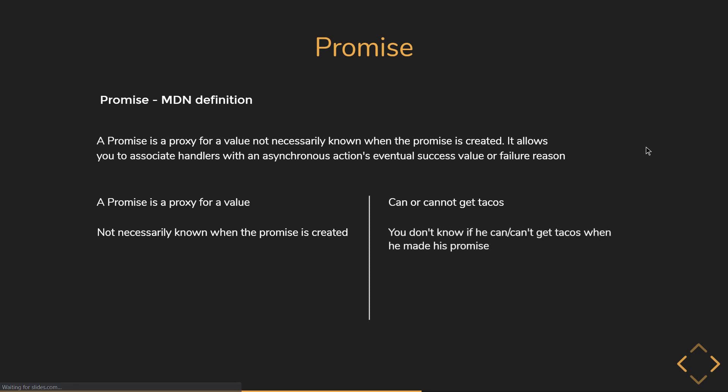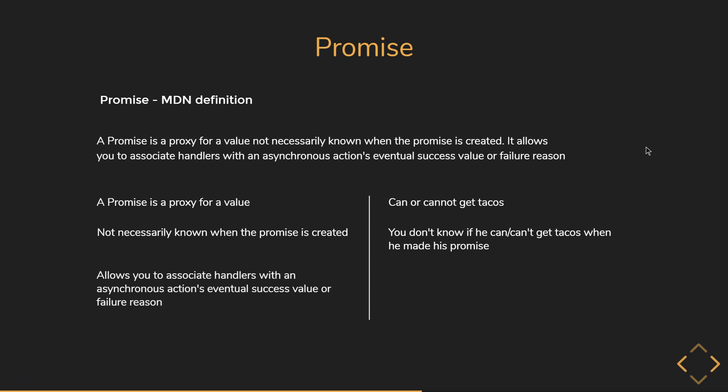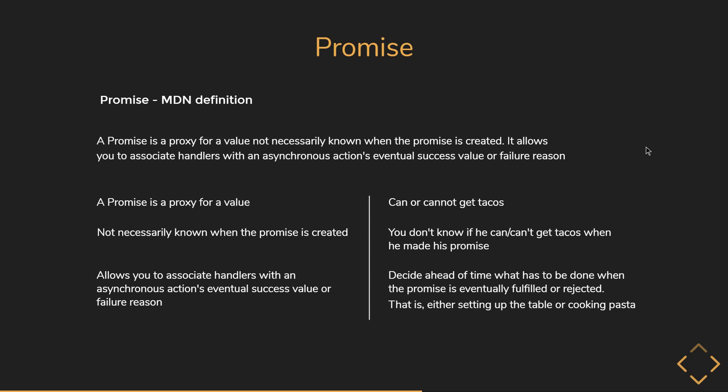The promise value is not necessarily known when the promise is created. In our example, you don't know which one of them is the value when your friend made his promise — he can get tacos or cannot get tacos. A promise allows you to associate handlers with an asynchronous action's eventual success value or failure reason. Based on the promise value, you could decide ahead of time what has to be done when the promise is eventually fulfilled or rejected — either setting up the table or cooking pasta. Hopefully the definition makes much more sense now.